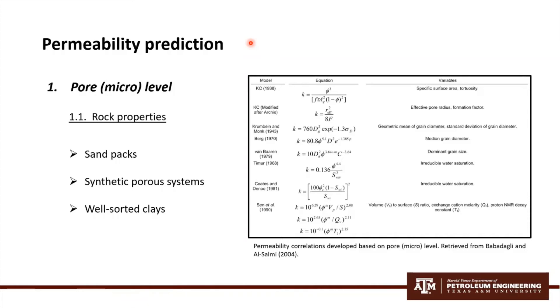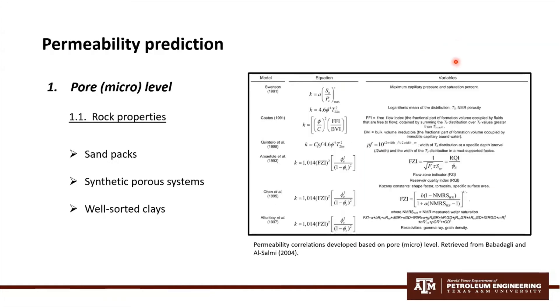Now I'm going to mention some of the permeability correlations associated with pore or rock characteristics. The permeability correlations can be observed here in the right figures, where we have the model, the equation associated with it, and the main variables. Here you can see the second part of the permeability correlations.